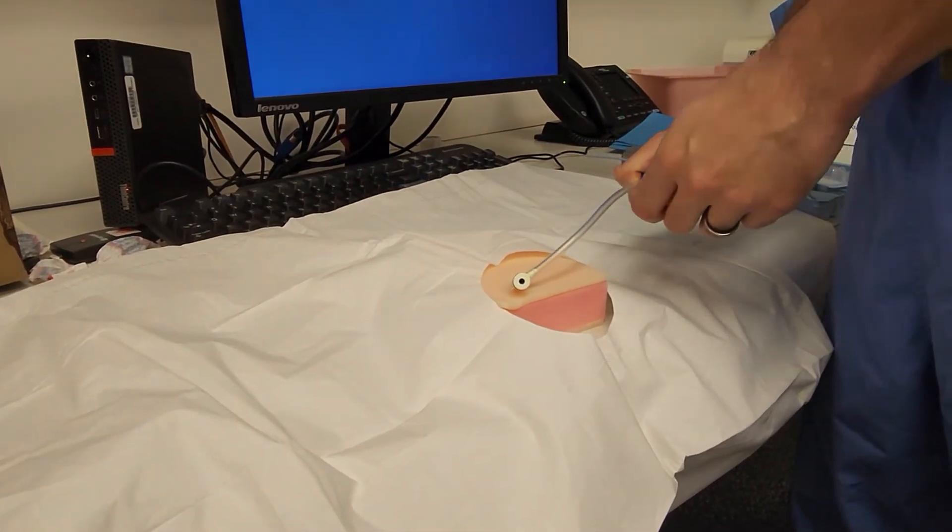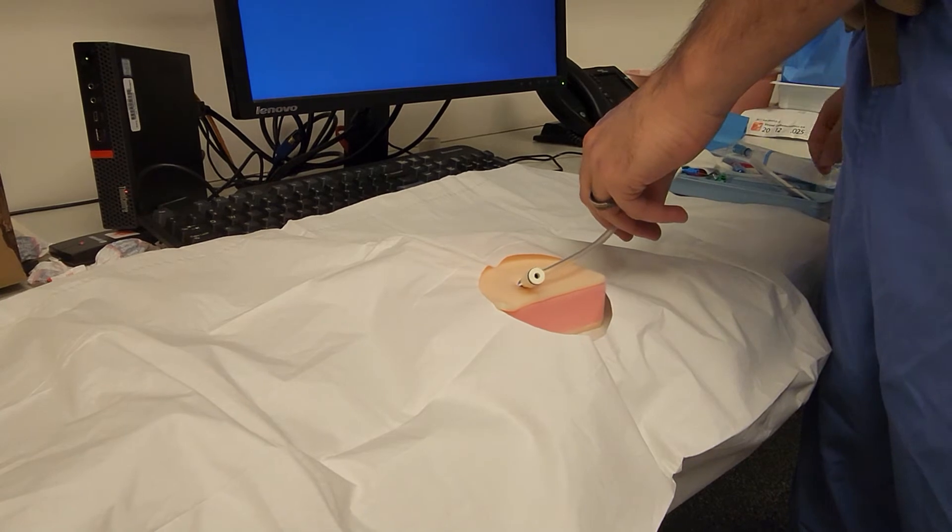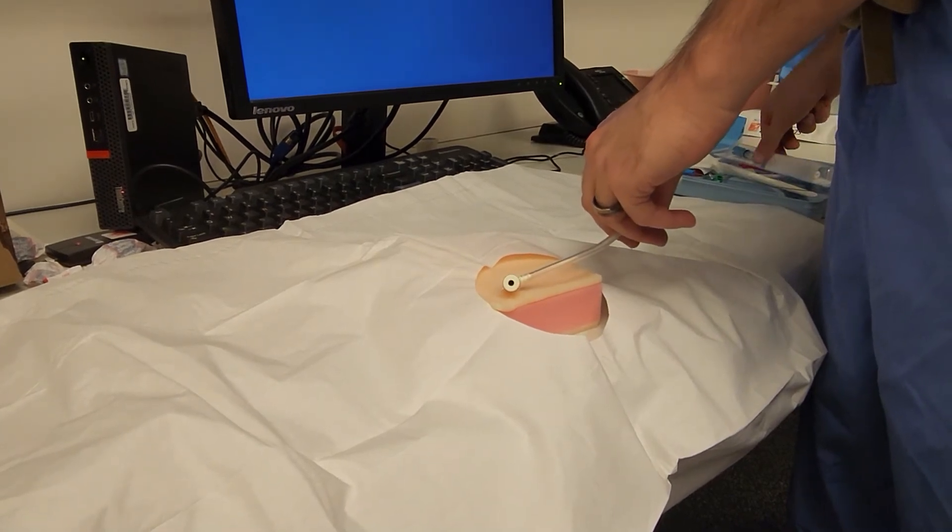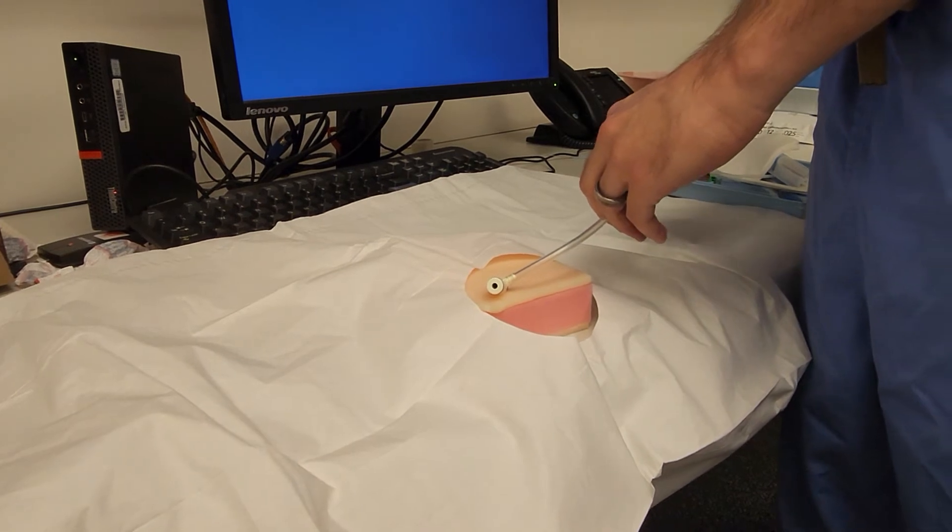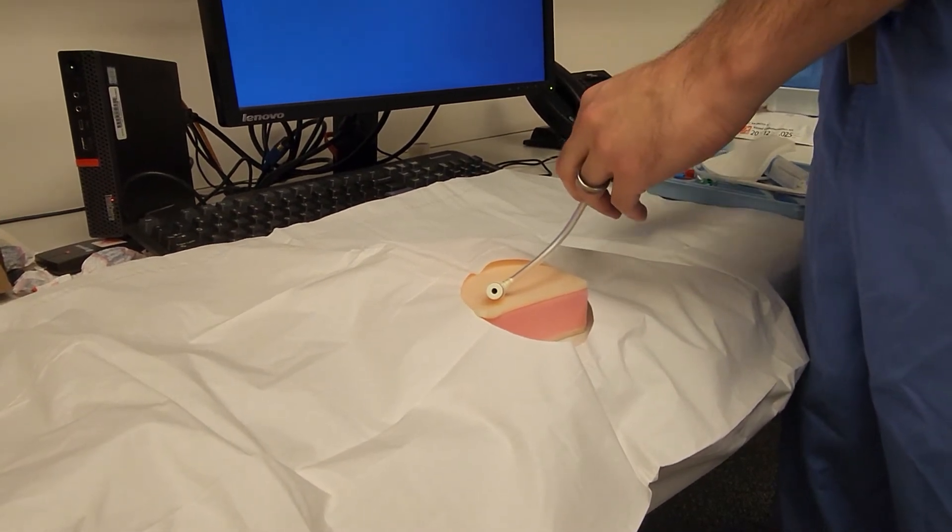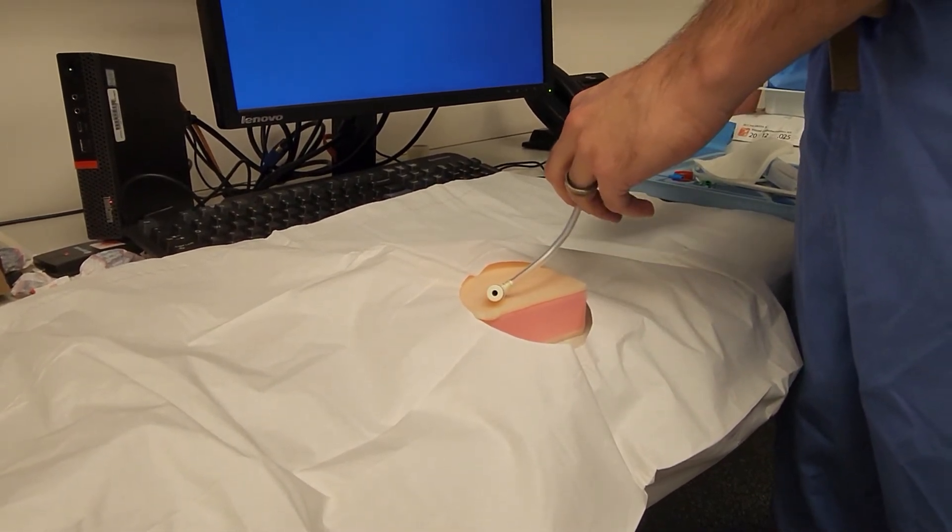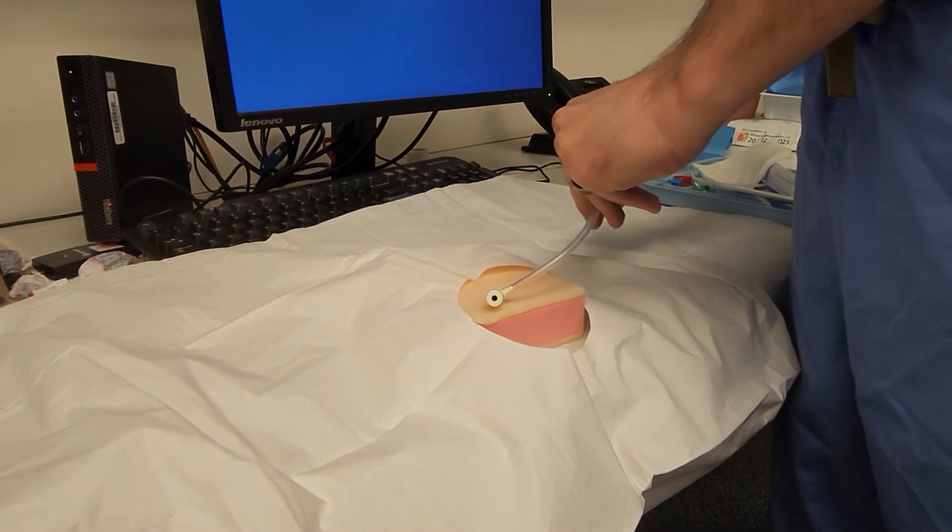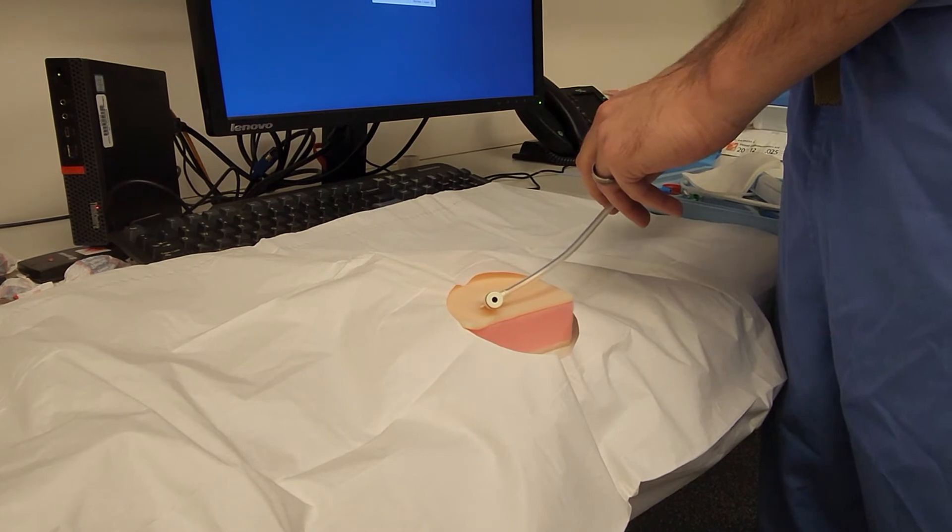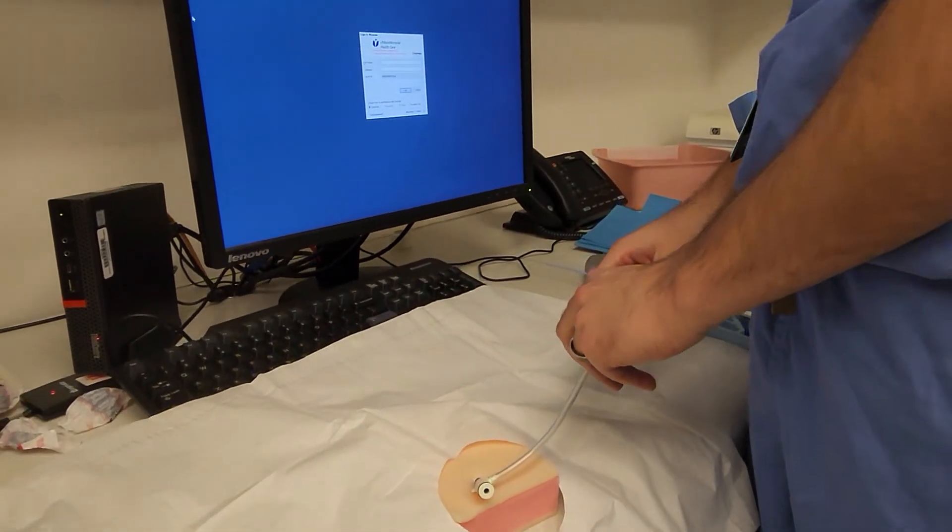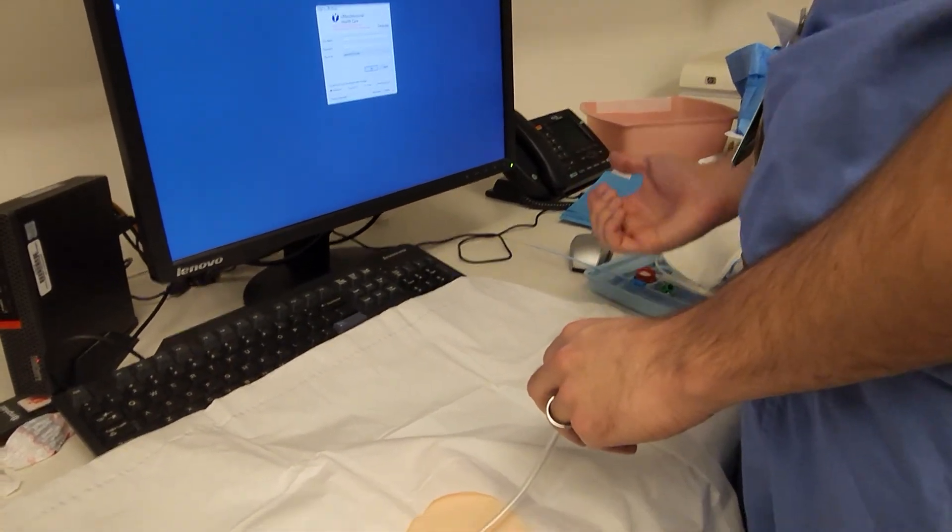Release your clamp. And actually before releasing the clamp, make sure you attach a luer lock to the end or blood will go everywhere. So I have a luer lock here. You can release, aspirate, and make sure it aspirates blood freely. And then flush it.